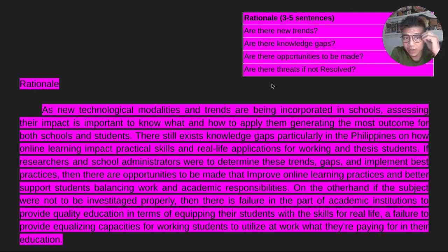Now, moving on to the rationale. With rationale, you try to make it short, as I mentioned. You try to make it very impactful by directly going to what are the new trends. What are the new knowledge gaps? Are there opportunities to be made? Are there threats if not resolved? For example, what are the new trends? As I mentioned, technological modalities and trends are being incorporated in school. These are the new trends. What are the knowledge gaps? There still exist knowledge gaps, particularly in the Philippines, especially in online learning. Are there opportunities to be made? For this example, I directly put in the words, trends, gaps, opportunities, and threats. There are opportunities to be made that improve online learning practices and better support students. Other threats, if not resolved, it's already situated here. I narrowed it down. Broke down the rationale to make it more urgent and important.